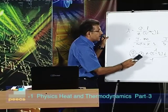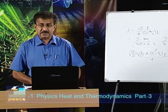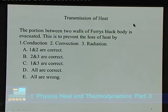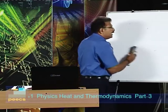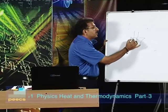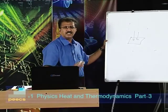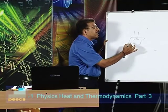The first question: the portion between the two walls of the Dewar (Ferris) black body is evacuated — this is to prevent loss of heat by which methods? Before answering, note that a black body absorbs the entire amount of heat radiation falling on it. An ideal approximation is the Ferris black body, a two-walled glass bulb with interior coated in lamp black or platinum black, with a conical projection opposite the opening.